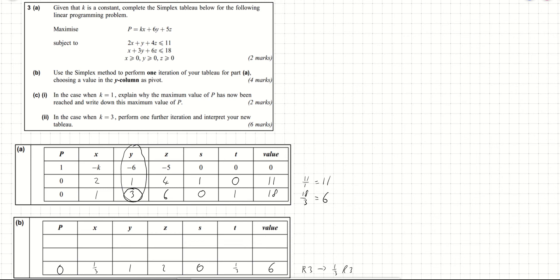Now in rows 2 and 1 we want to get zeros in the y column. For row 2 we currently have a 1, so we replace row 2 with row 2 minus the new row 3. That gives: 1 minus 1 is 0 in the x column, 4 minus 2 is 2 in the z column, 1 minus 0 is 1 in the s column, 0 minus one-third is minus one-third in the t column, and 11 minus 6 is 5 in the value column.